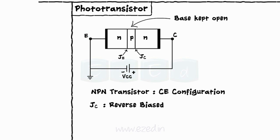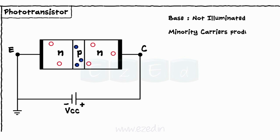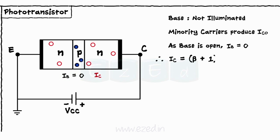When the base is not illuminated by light, the thermally generated minority carriers produce reverse saturation collector current IC0. As the base is open, the base current IB is 0. Thus, the collector current is found to be IC equals (beta + 1) into IC0.